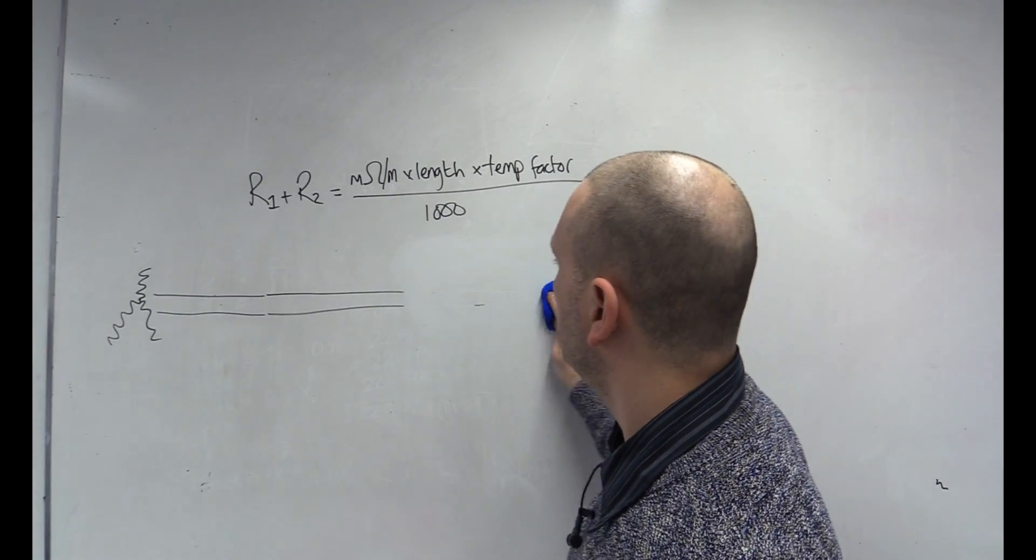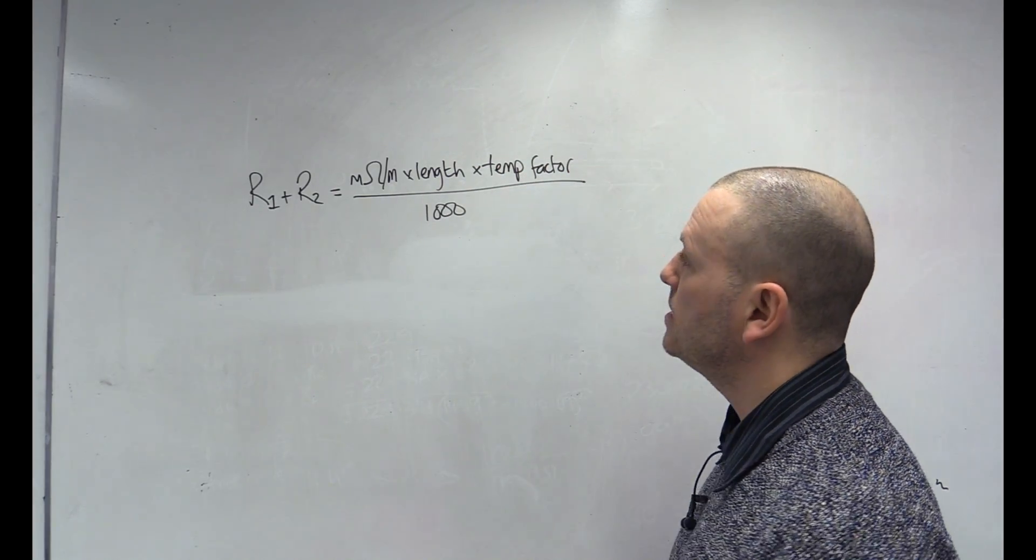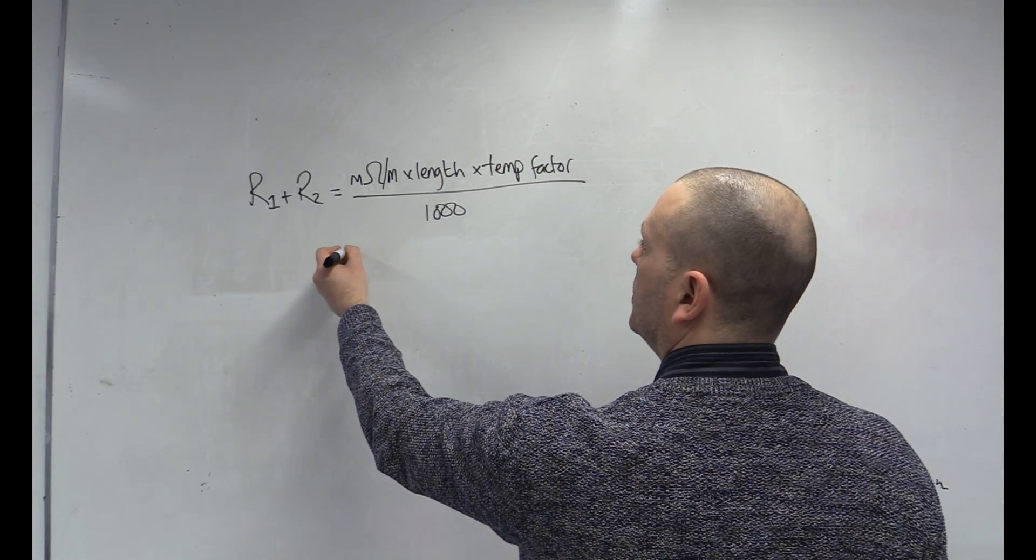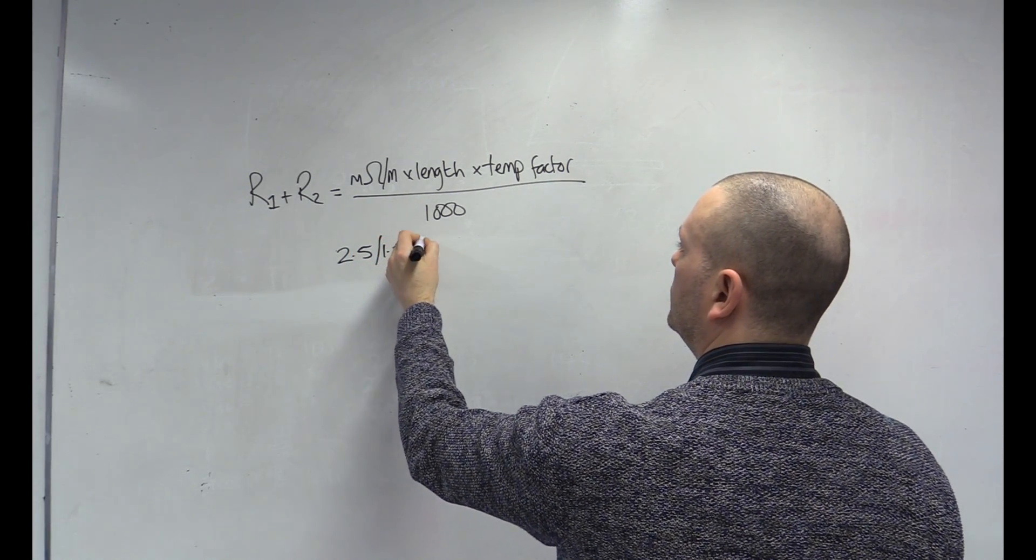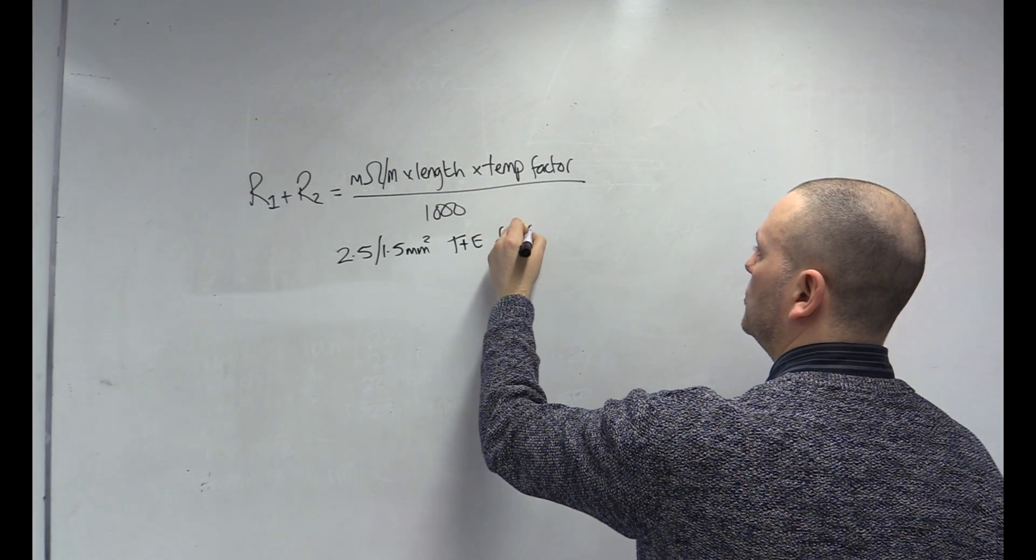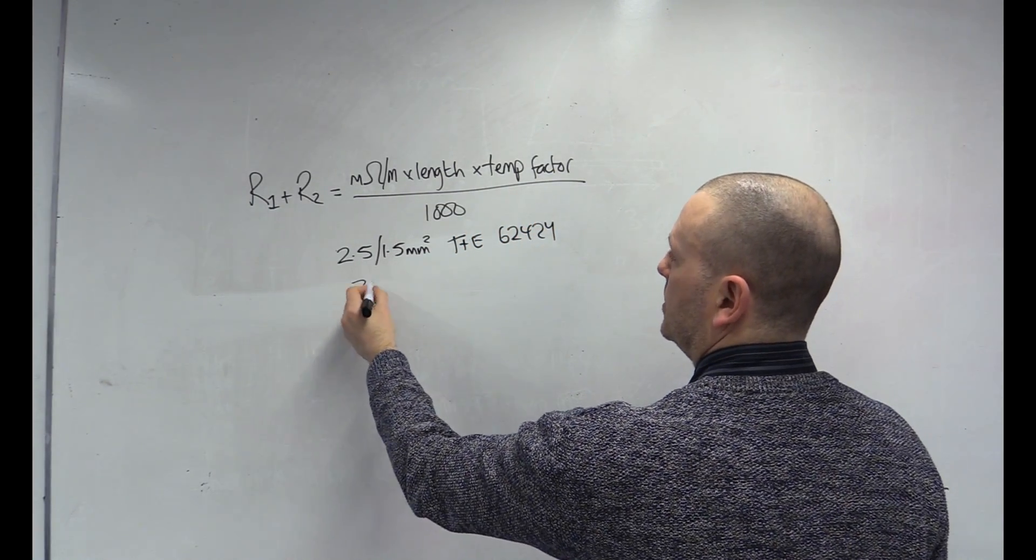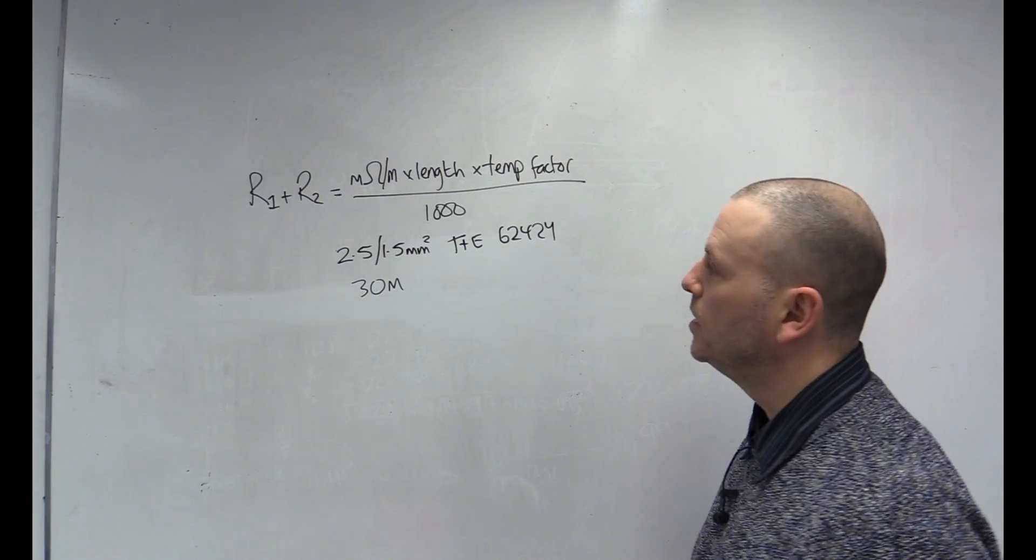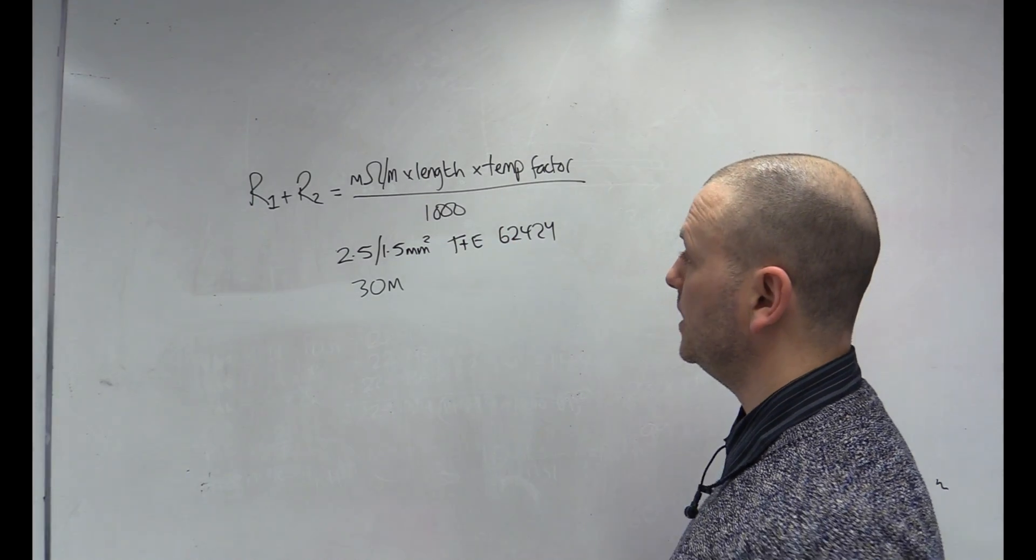So, let's have a go. Let's say I've got a 2.5, 1.5, twin and earth cable, twin and earth, or 6242Y, as its code is known. And let's say it's 30 metres long. Well, it's as simple as this. We're just going to plug those values in.